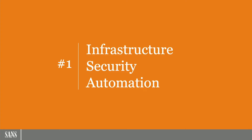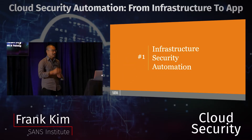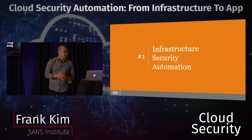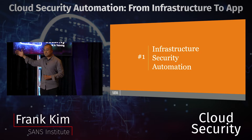In this session, there are three things related to automation I want to share with you. Number one is automation related to infrastructure security elements. Number two is automation related to your DevOps pipeline. And number three is automation related to some application security issues. So let's go ahead and start with number one: infrastructure security automation. This is a big topic, so I want to share just one small aspect and do a simple, quick demo for each of these three items.